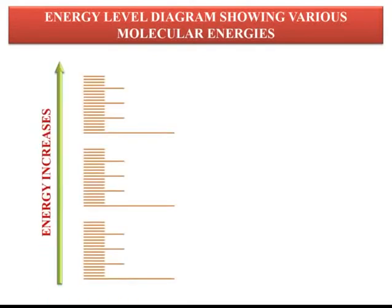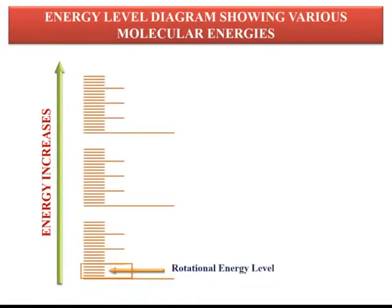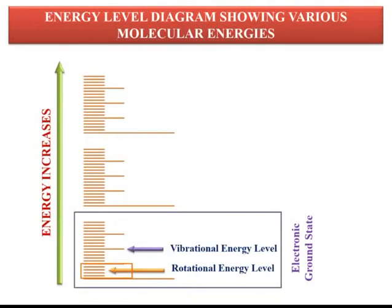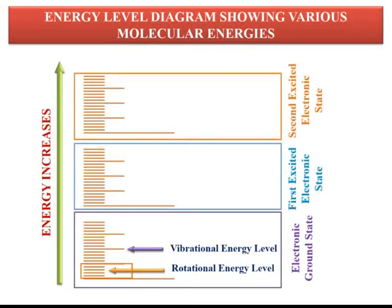The energy level diagram shows various molecular energies. In the diagram, the rotational energy levels are the lowest energy levels. Vibrational energy levels are higher, and the ground state electronic energy level, the first excited electronic energy state, and the second excited electronic energy level are shown. Each electronic energy level contains vibrational energy levels, which in turn contain rotational energy levels. The value of rotational energy is lower than vibrational energy, which is again lower than electronic energy.